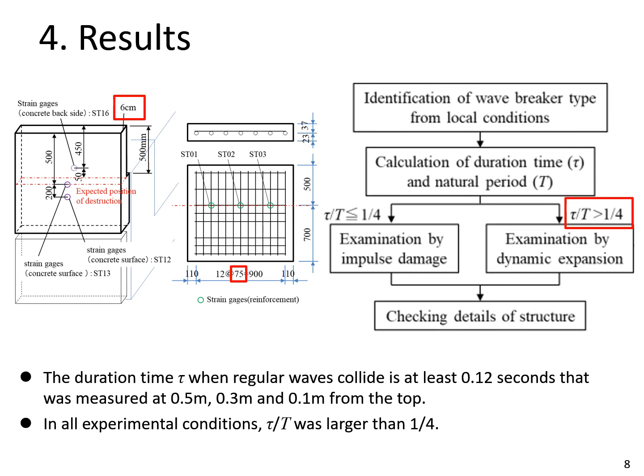From this slide, I'll explain the results. First, I'll calculate tau per T. The natural period T for concrete plates with a thickness of 6 cm and the main wave forcing bar pitch of 75 mm is calculated as 0.03 seconds.